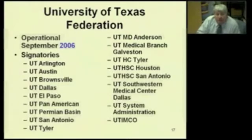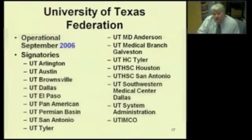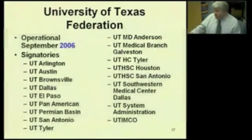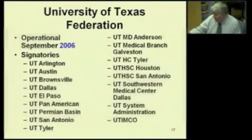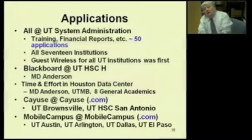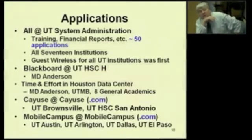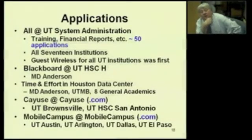The University of Texas Federation has been operational since September of 2006. There are 17 entities listed: the 15 institutions that are part of the University of Texas, plus two that are not degree-granting. One is UT System Administration, which is our corporate holding company overseeing all other institutions, and the other is UTEMCO, the investment management company that oversees the endowment.